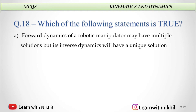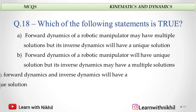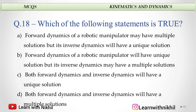Which of the following statements is true? Forward dynamics of a robotic manipulator may have multiple solutions, but inverse dynamics will have a unique solution — or the opposite of it. The answer is the first: forward dynamics of the robotic manipulator will have multiple solutions, but inverse dynamics will have a unique solution.